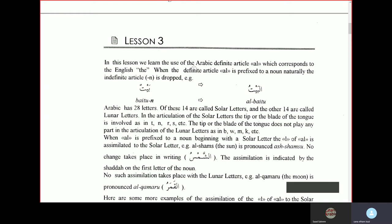In this lesson, we learn the use of the Arabic definite article al, which corresponds to the English the. When the definite article al is prefixed to a noun, naturally the indefinite article is dropped. For example, baytun becomes al-baytun.